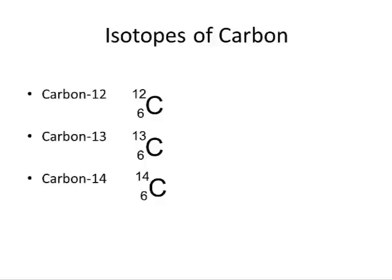Different atoms of a given element have different numbers of neutrons, giving each atom a different mass number. When we're looking at a single atom or isotope, the mass number allows us to calculate how many neutrons that atom has. The number of protons for a given element will remain unchanged. Since most of an atom's mass is contained in the nucleus, we can determine the mass for that isotope, which would be very close to the mass number. Here we see carbon-12, carbon-13, and carbon-14.